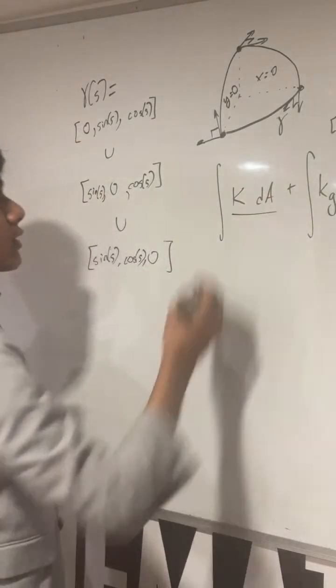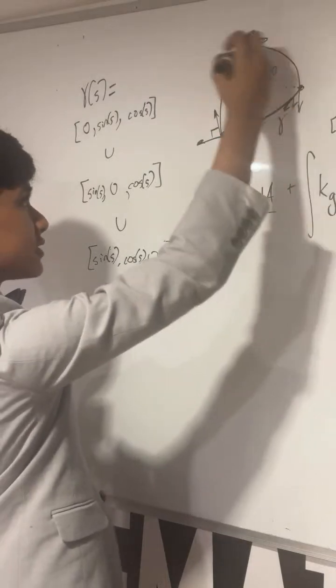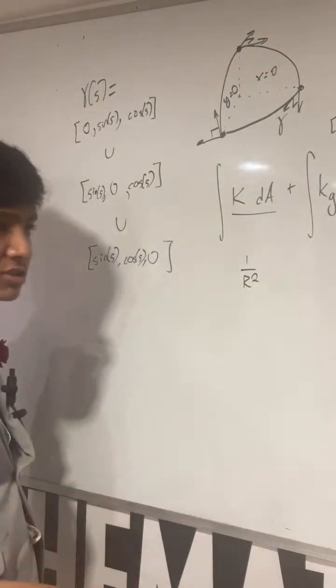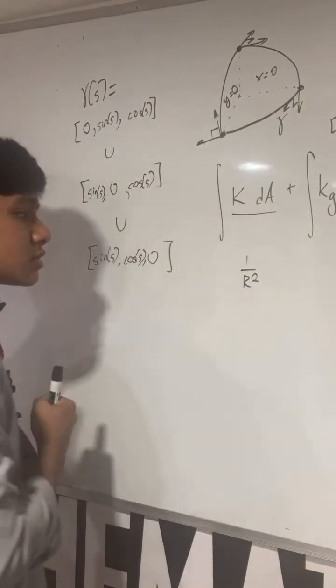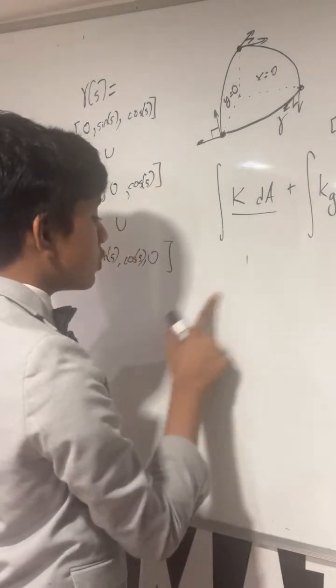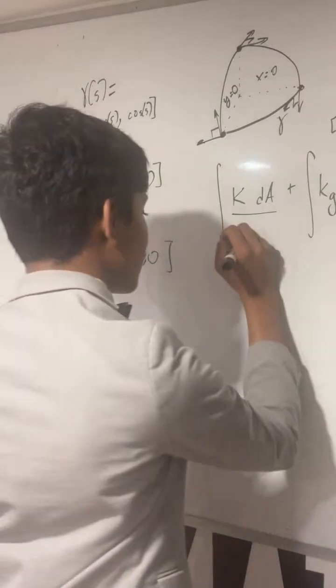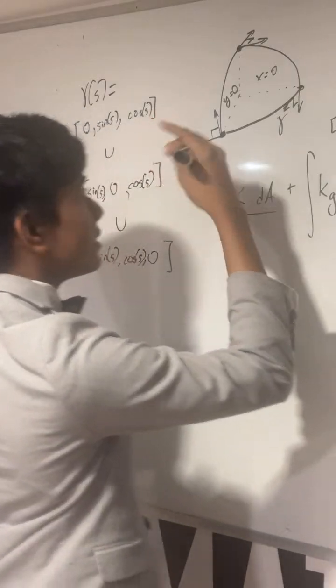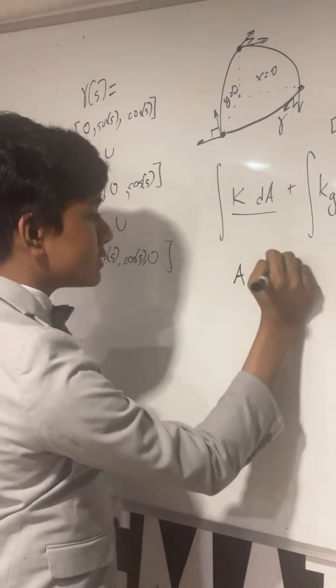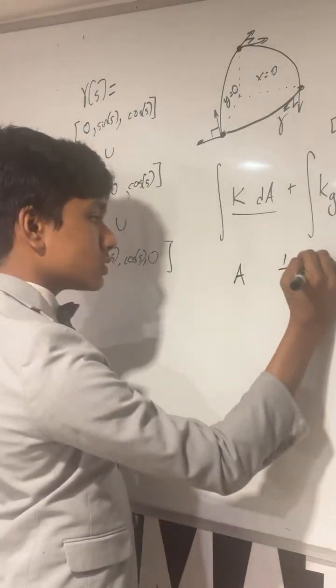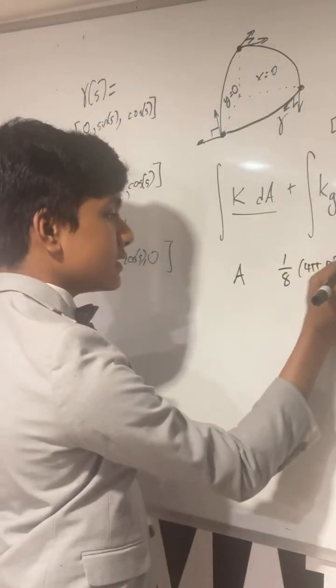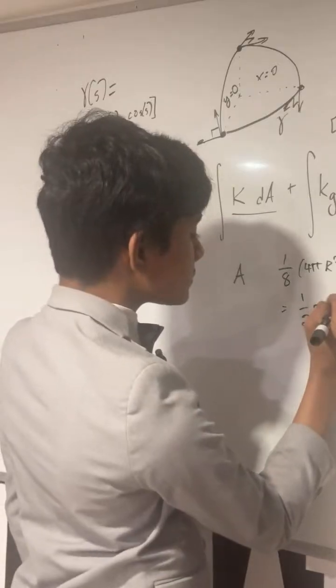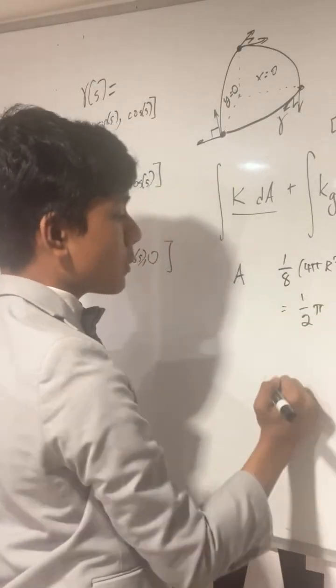Now what do we have to do? First, we have to find the Gaussian curvature over this surface. But the Gaussian curvature of the sphere is just one over r squared. That doesn't change if you slice it up into pieces, because Gaussian curvature is a local property, and the radius of this sphere is one, which makes the Gaussian curvature just one. And the integral of 1 dA is just the area.